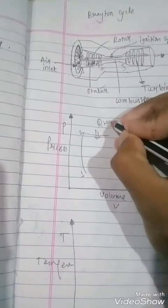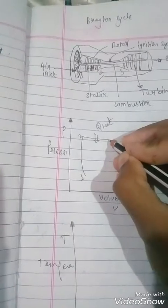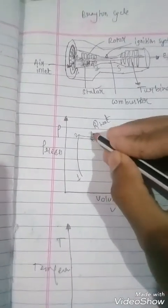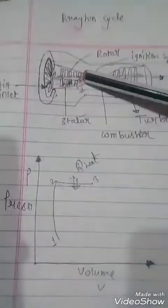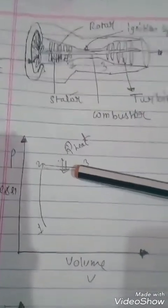Heat is supplied. Due to that heat, the fuel gets inside. From two to three the pressure remains constant. The entire combustion chamber burns the fuels and compresses.